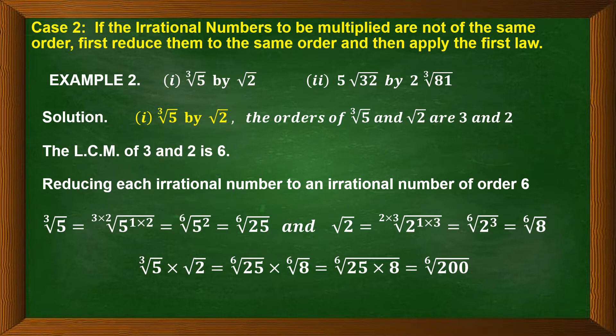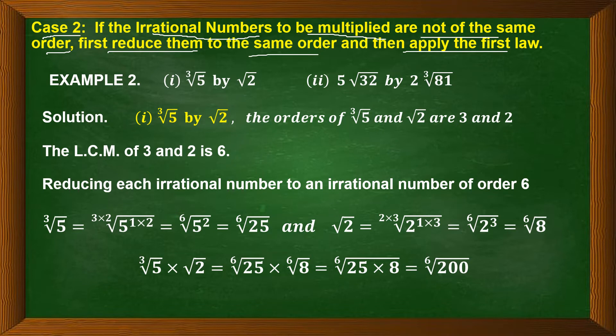According to case 2, if the irrational numbers to be multiplied are not of the same order — that means they are of different orders — first of all reduce them to the same order and then apply the first law. We will bring them to the same order and then multiply a into b under the same root.